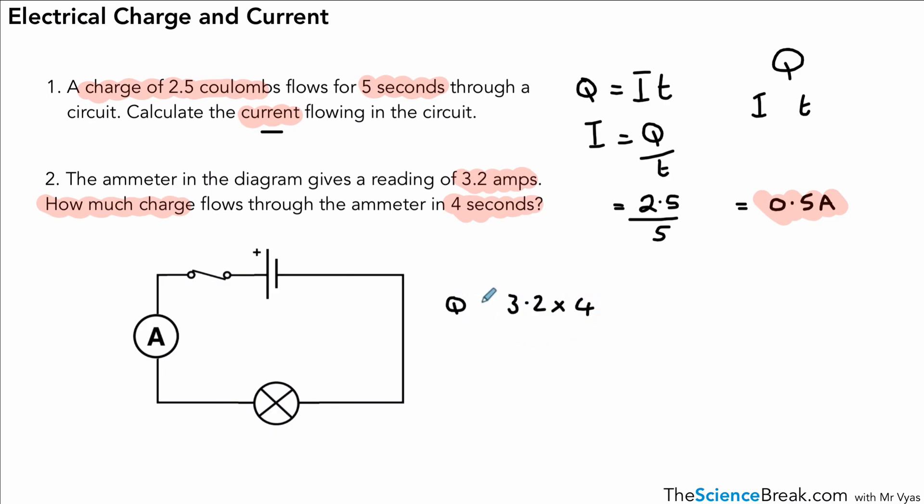It's 3.2 times 4. That gives us an answer of 12.8. And we are measuring the charge. So it's 12.8 coulombs.